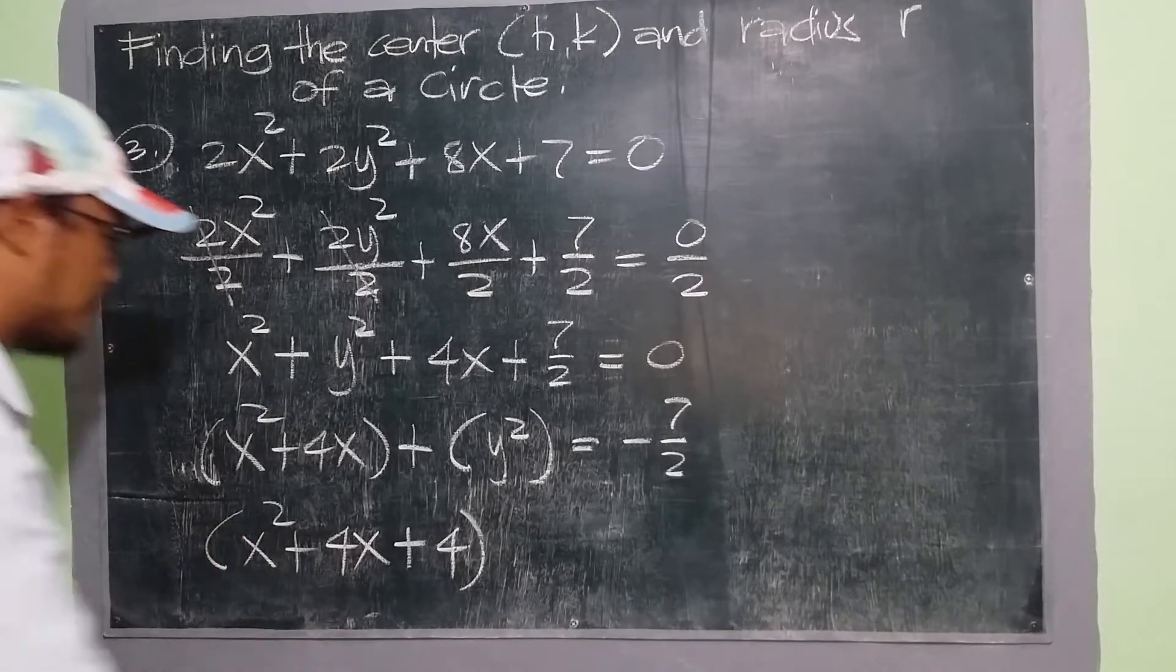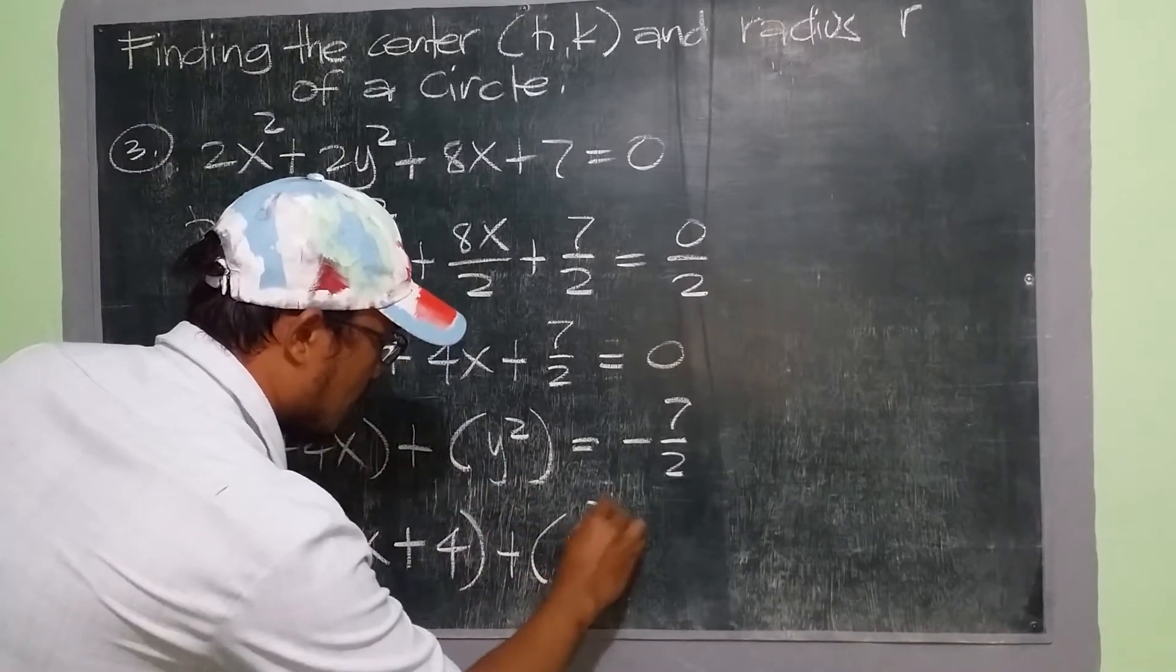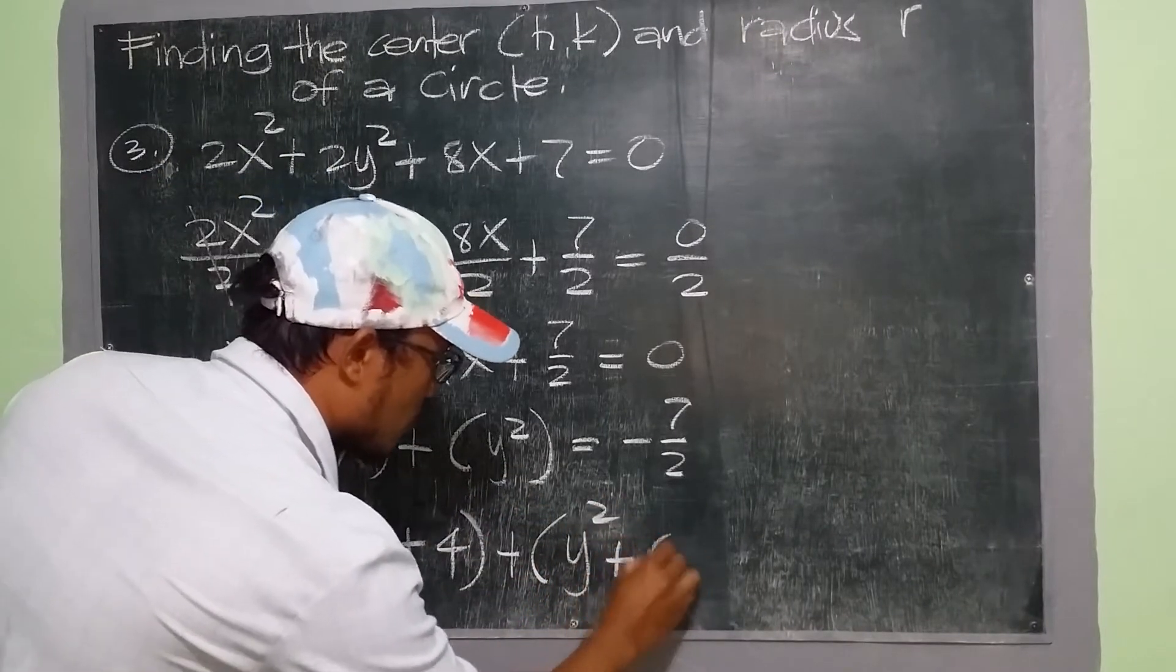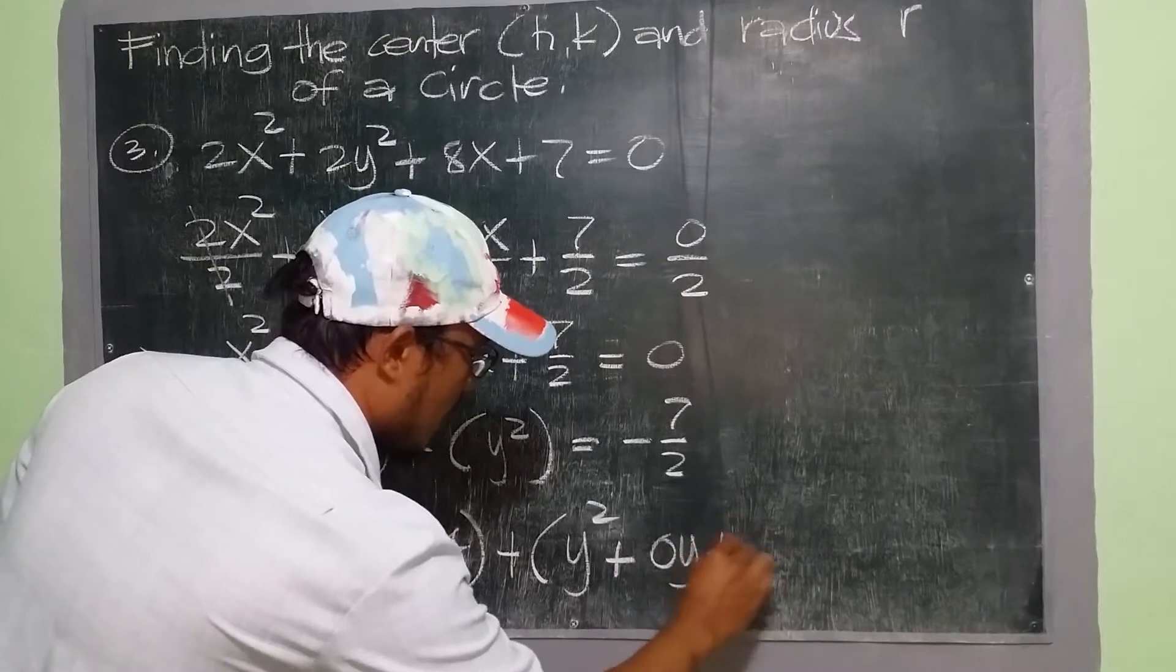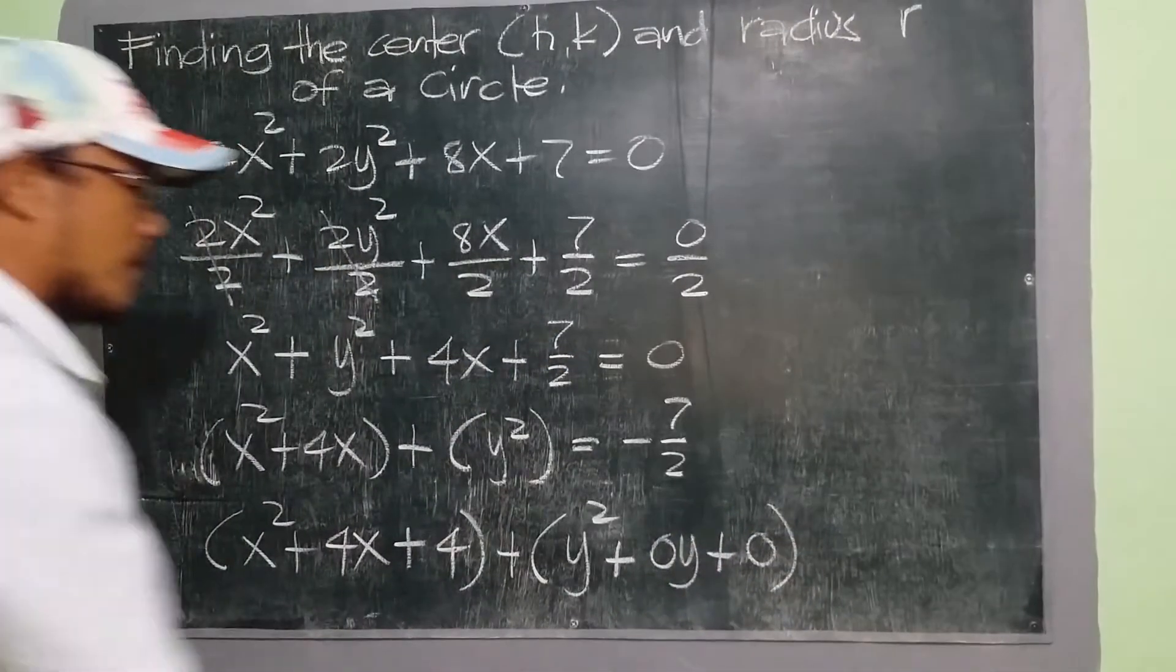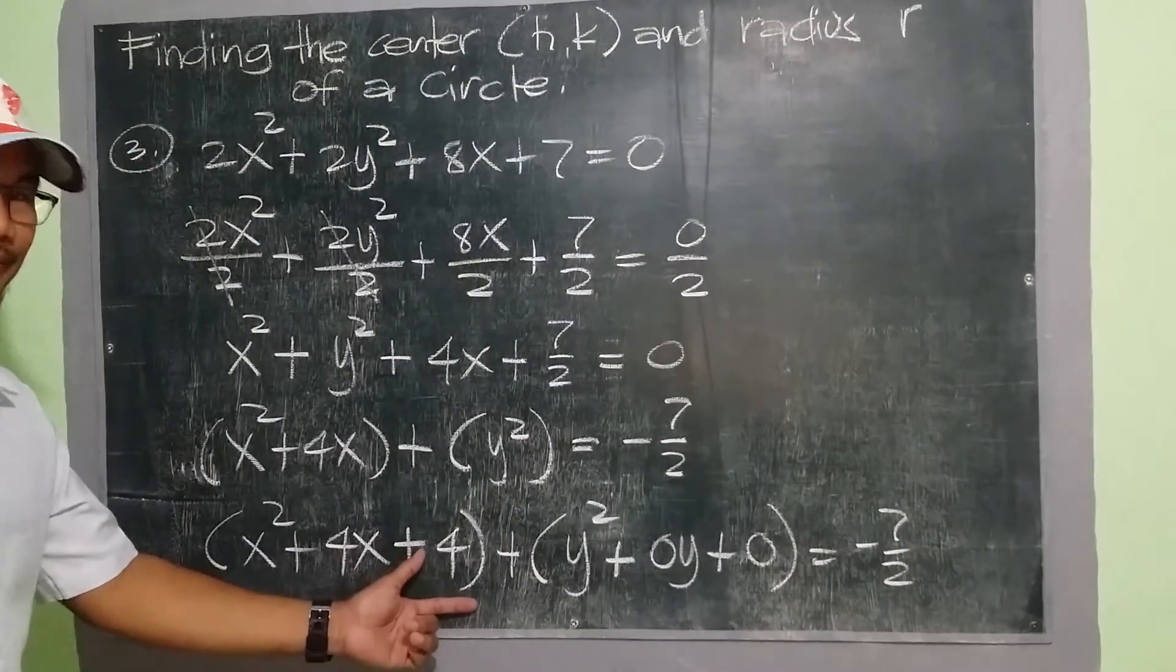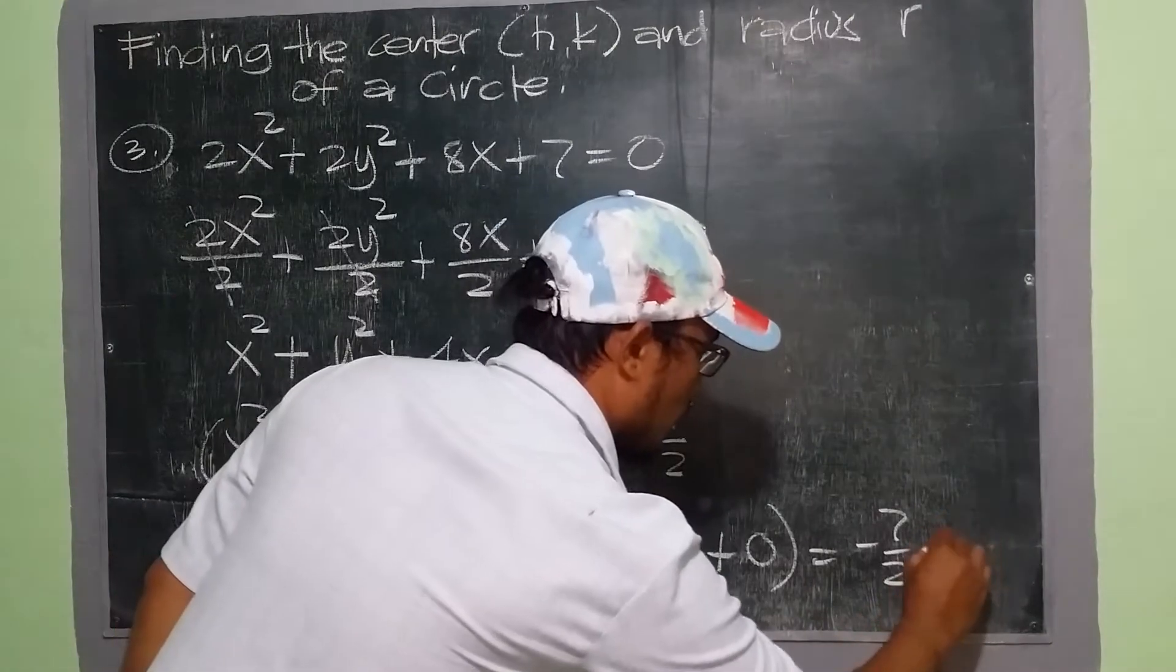Plus, since we only have y squared, it is understood that our y is 0, so we have 0y, and our third coefficient should be 0. And then negative 7 over 2, since we added 4, so we need to put 4.